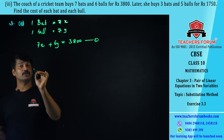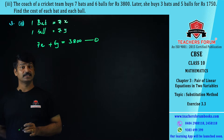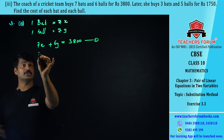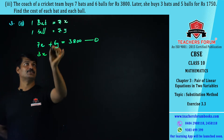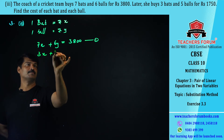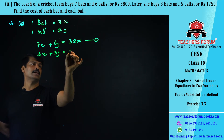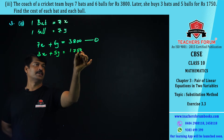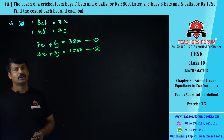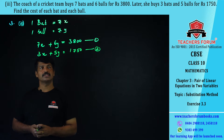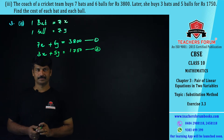The cost of three bats is 3x (since one bat costs rupees x), and five balls cost 5y. So: 3x + 5y = 1750. This is equation number two. Now we use the substitution method to find the values of x and y.